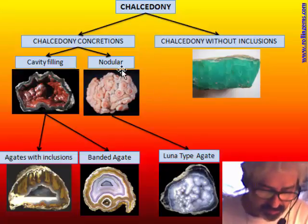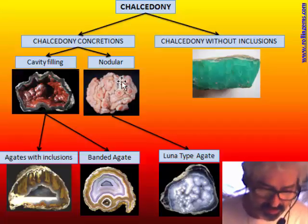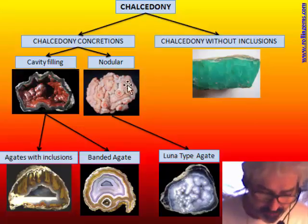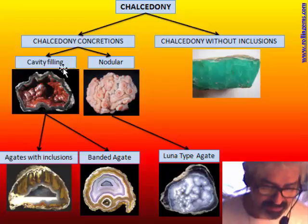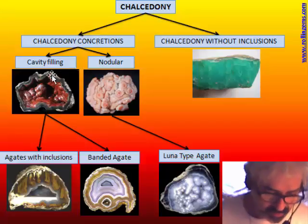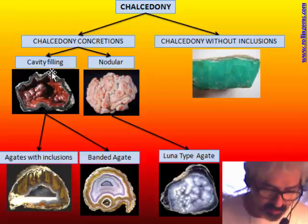Nodular concretions are real concretions growing as a nodule from a point — from the inside to the outside. The growth adds chalcedony around a core of something. The other possibility is that chalcedony grows stuck to the wall of a cavity and makes a botryoidal or bubbled structure, filling the cavity from outside to inside.